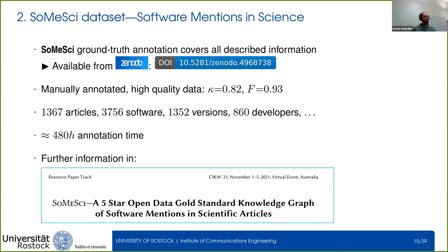The first thing we need is a ground truth dataset. We use SoMeSci — short for 'Software Mentions in Science' — an annotation made in our prior work, available from Zenodo, covering all the aspects just described. It's manually annotated with high data quality, with inter-annotator agreement values of Kappa 0.92 and S-Score 0.93. It contains more than 1,300 articles and 3,700 software mentions. It was quite costly to annotate, with more than 480 hours spent on annotation time.